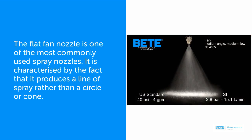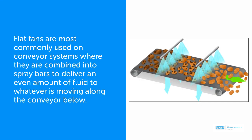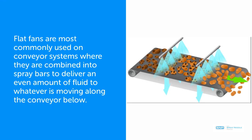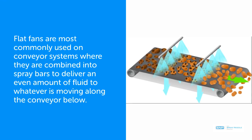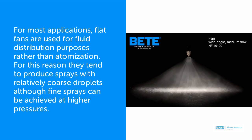A flat fan nozzle is one of the most commonly used spray nozzles. It is characterized by the fact that it produces a line of spray rather than a circle or cone. Flat fans are most commonly used on conveyor systems where they are combined into spray bars to deliver an even amount of fluid to whatever is moving along the conveyor below. For most applications, flat fans are used for fluid distribution purposes rather than atomization. For this reason, they tend to produce sprays with relatively coarse droplets, although fine sprays can be achieved at higher pressures.